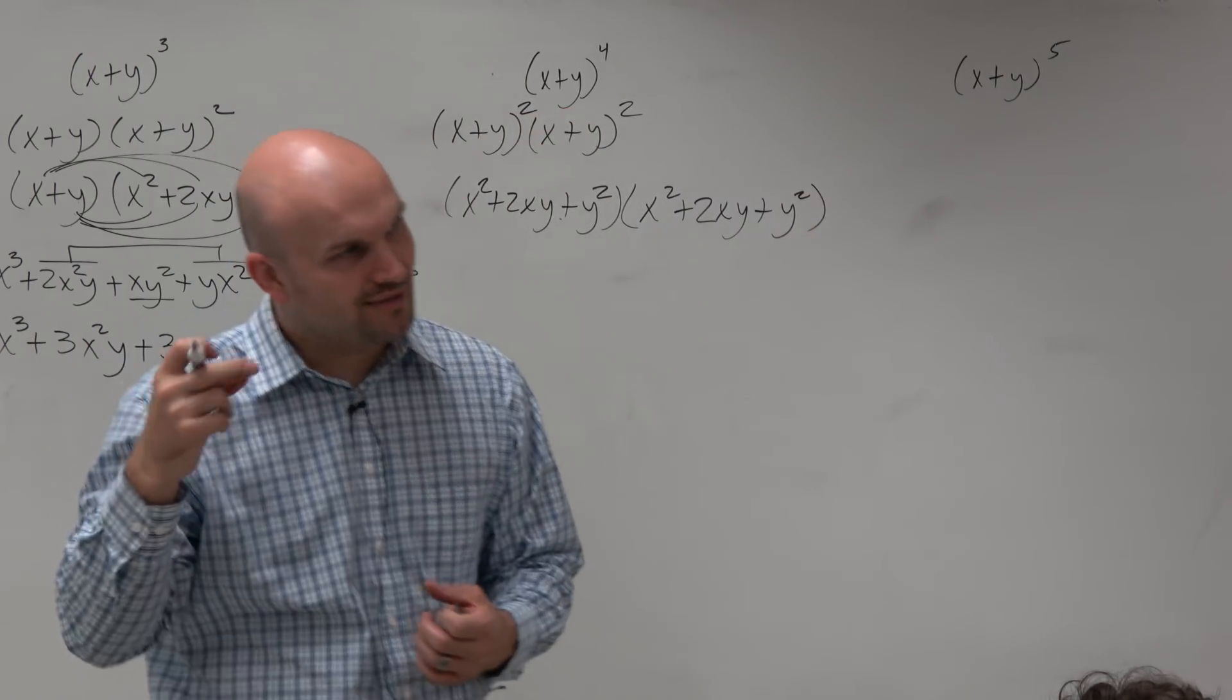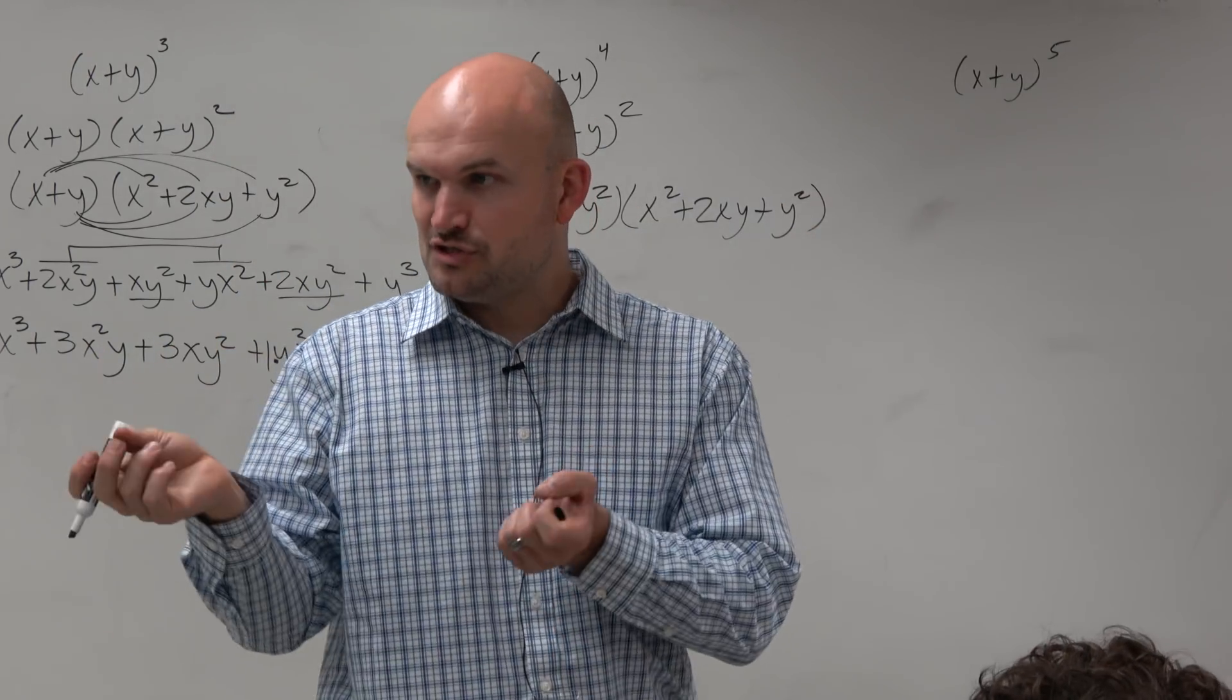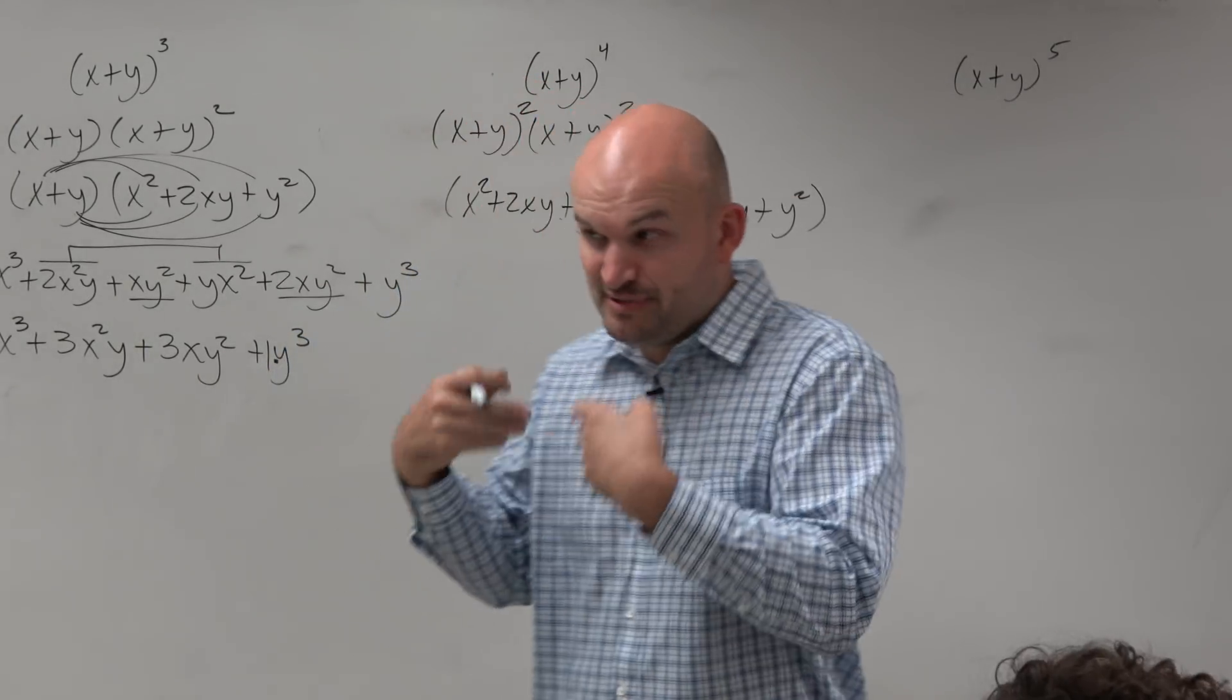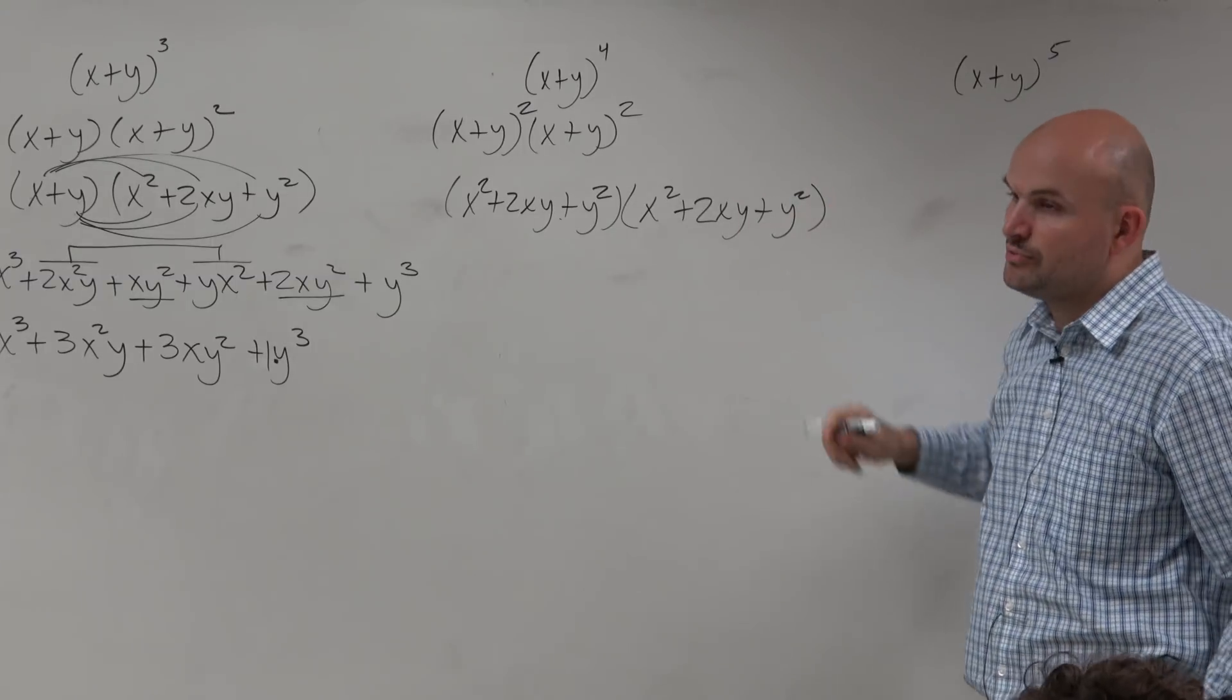Again, guys, a binomial squared - we've got to have that automatic. First term squared, last term squared, 2 times the product of the first two terms, right? And we'll be doing a lot of examples, so hopefully you guys can get to this point rather quickly.